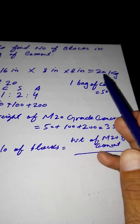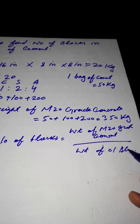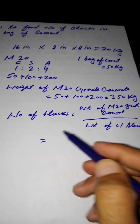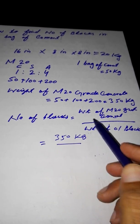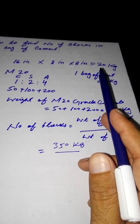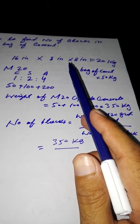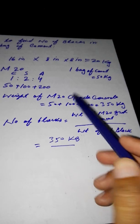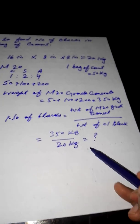The weight of one block is supposed to be 20 kg. It will be different depending on the type of block — it can be 15 kg or 18 kg. In some cases we use hollow blocks, in some places we use solid blocks. I am assuming just 20 kg. So the total weight of 350 kg is divided by 20 kg per block to give us the number of blocks.